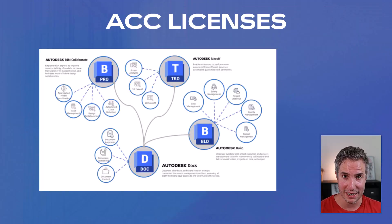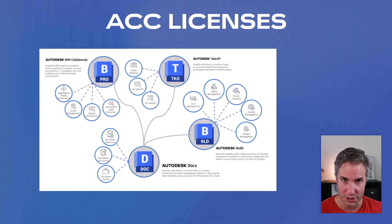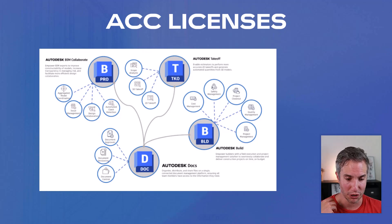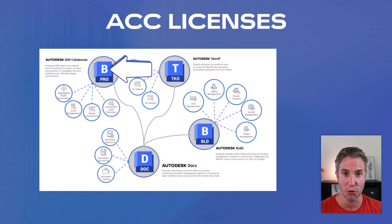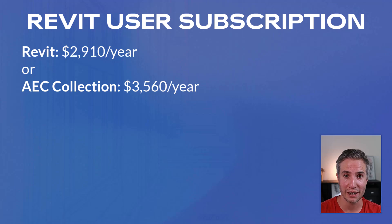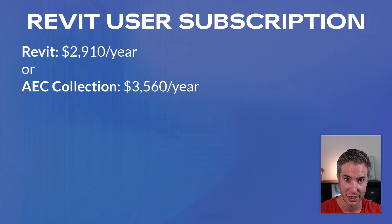Now let's talk about pricing and subscription licenses. Since ACC is a big ecosystem of different products for different customers, there is no single price point — you have to find the right subscription. There are subscriptions for contractors and for construction products. The one you want to get is BIM Collaborate or BIM Collaborate Pro, which gives you access to all the modules we've mentioned. These are the prices as of June 2024, so check to make sure they are still up to date.